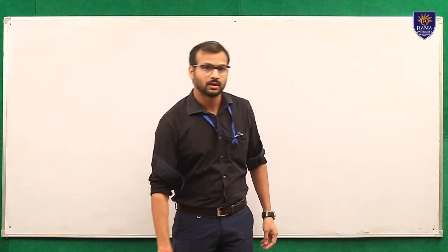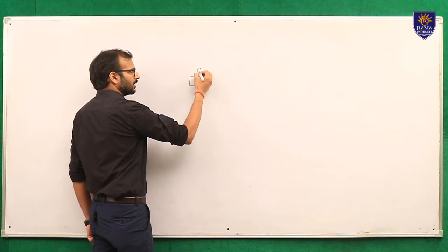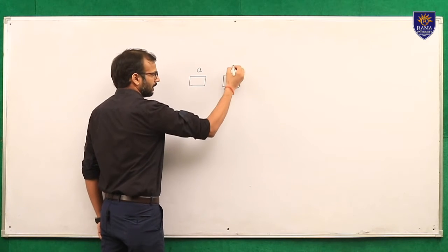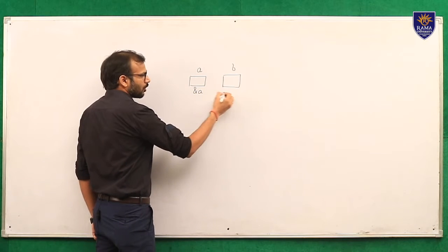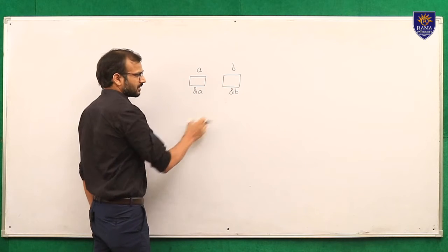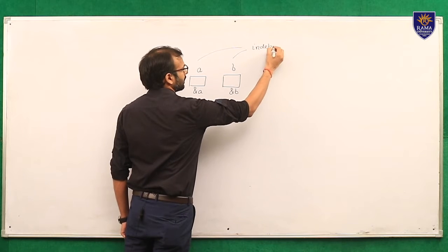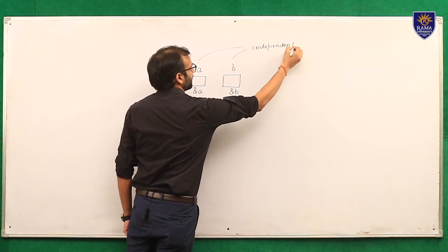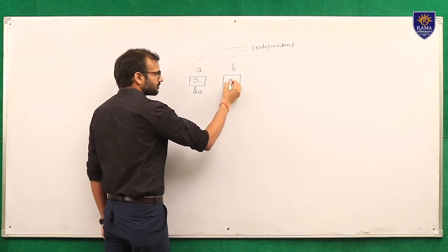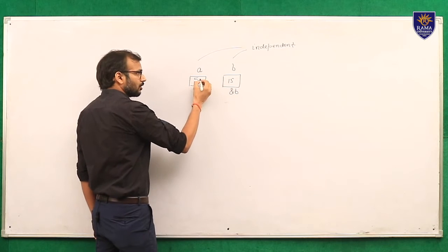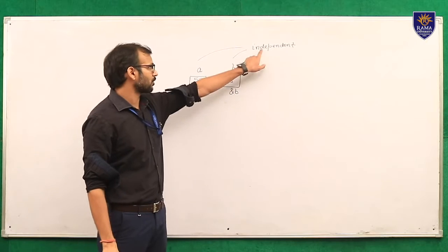Have a look on the board — suppose we have declared two variables. In the memory, A will occupy space and B will also occupy some space. Their addresses should be non-identical; they will not be similar. That is why these two variables are independent. Independent simply means that if we change the value of A, suppose it's 5 and B is 15, as we change the value of A to 50, it will not affect the value of B. This is the concept of independency.